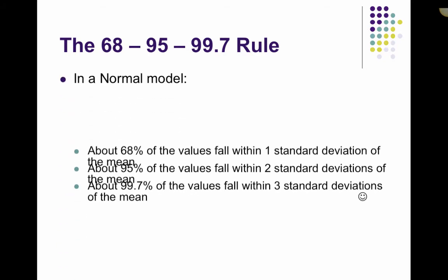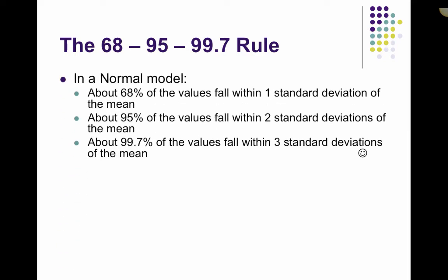So, in a normal model, about 68% of all values fall within one standard deviation of the mean. That is one standard deviation above, and one standard deviation below. About 95% of values fall within two standard deviations of the mean. Again, above and below. And 99.7% of the values fall within three standard deviations of the mean.